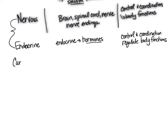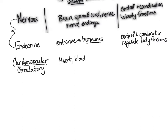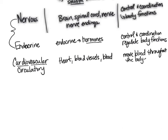The next system is the cardiovascular system, also called the circulatory system. 'Cardio' relates to the heart and 'vascular' relates to the vessels, so the cardiovascular system is composed of the heart, our blood vessels, and the blood within them. The function of this system is to move blood throughout the body, which in turn moves nutrients and wastes.